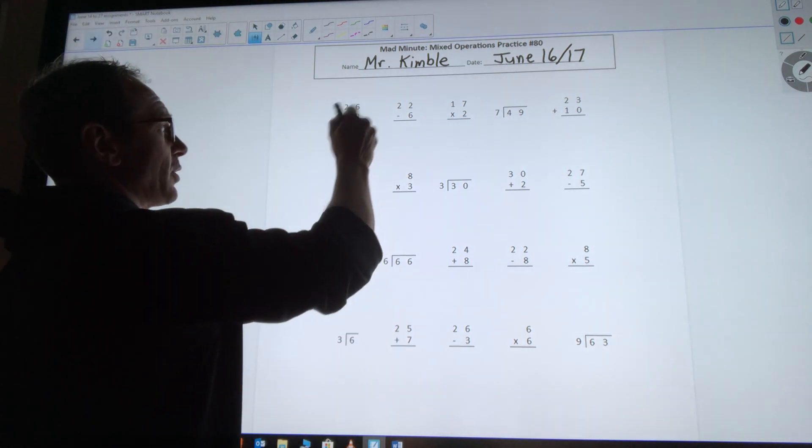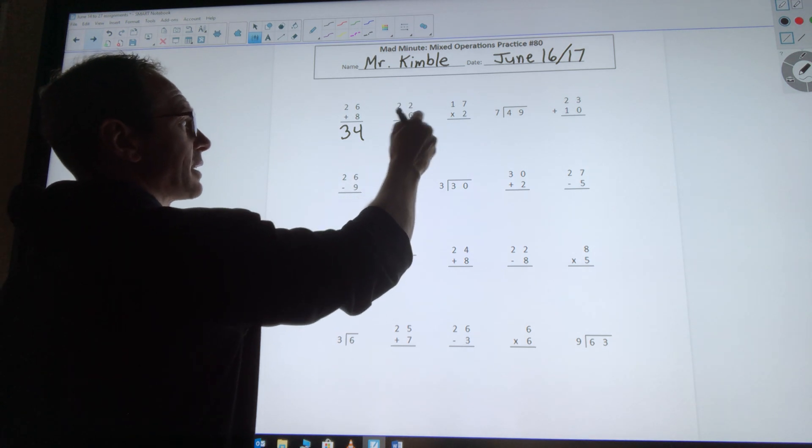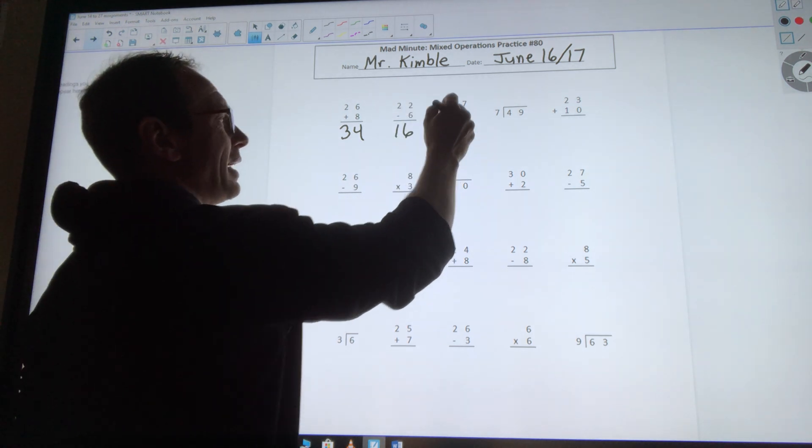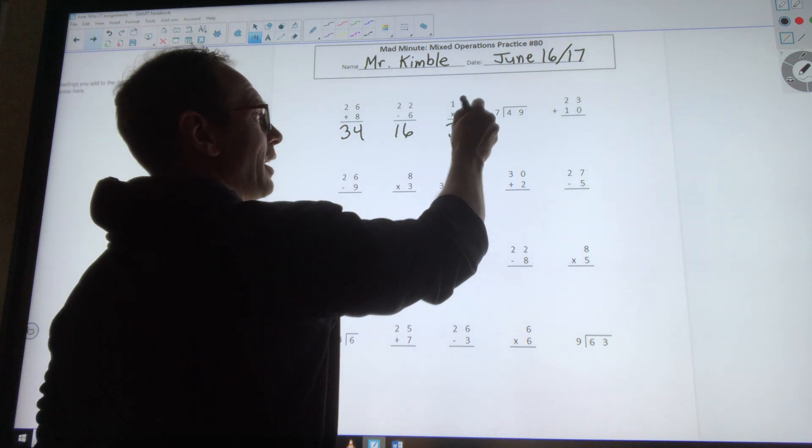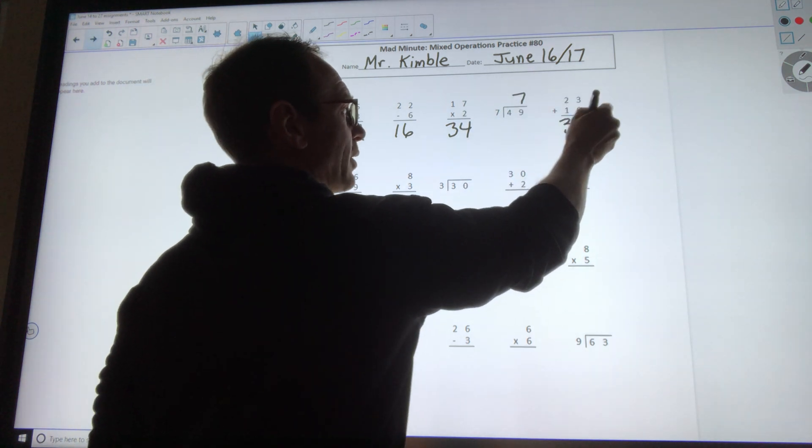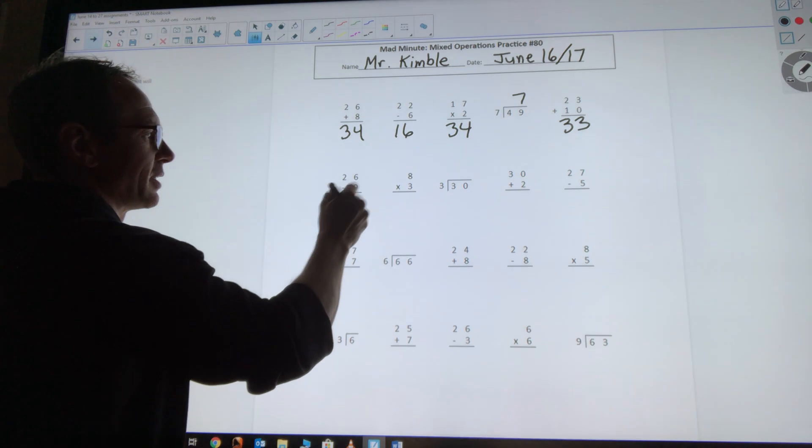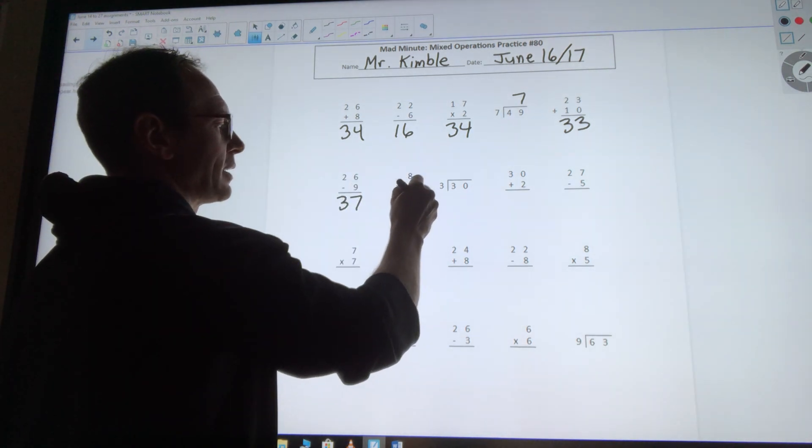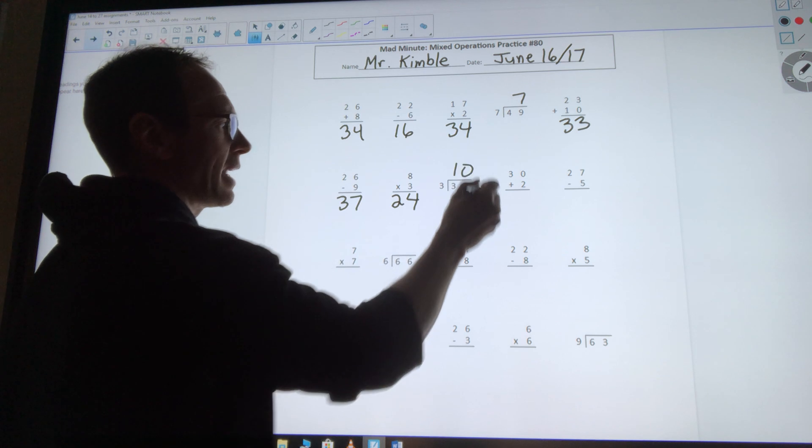26 plus 8 is 34. 22 minus 6 is 16. 17 times 2 is 34. 49 divided by 7 is 7. 23 plus 10 is 33. 26 minus 9 is 37. 8 times 3 is 24. 30 divided by 3 is 10.